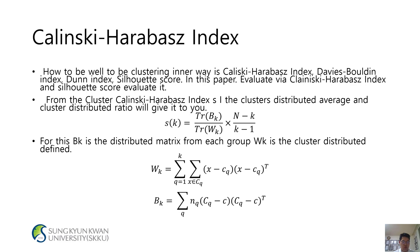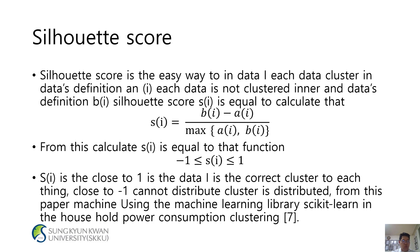Silhouette Score: Silhouette score is an easy way to define in-data cluster membership. Each data cluster is defined in terms of whether each data point is clustered within its own cluster. The silhouette score Si = (bi - ai) / max(ai, bi). Si close to 1 means the data is in the correct cluster; close to -1 means the cluster assignment is incorrect. From this paper, machine learning library scikit-learn is used in the household power consumption clustering.